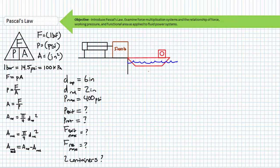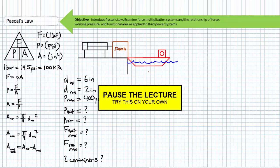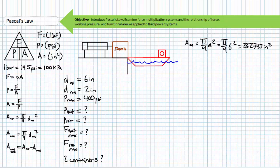Before we wrap up, let's do one more illustrated example problem. Given a huge cylinder with a six-inch diameter cap and a two-inch diameter rod, determine the working pressure for both extension and retraction, given the cylinder is tasked with pushing and pulling 5,000-pound containers on and off barges. Additionally, determine the maximum extension and retraction force given maximum pressure is limited to 400 PSI. Finally, can this system push and pull two containers on or off at once, and if not, what modifications might be necessary? Pause the lecture and take your best shot.